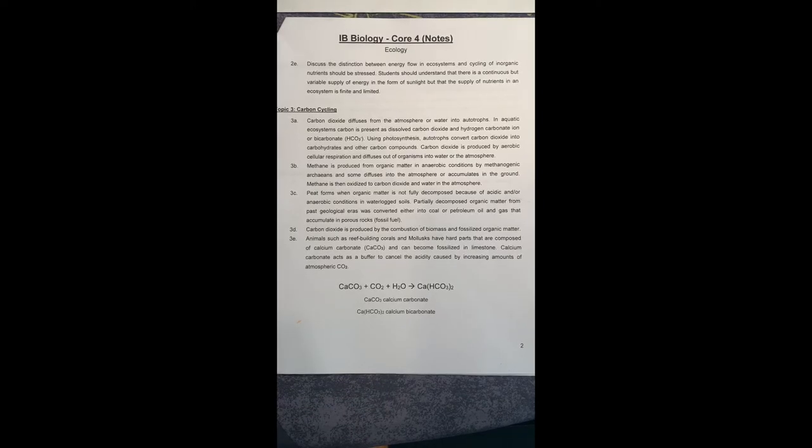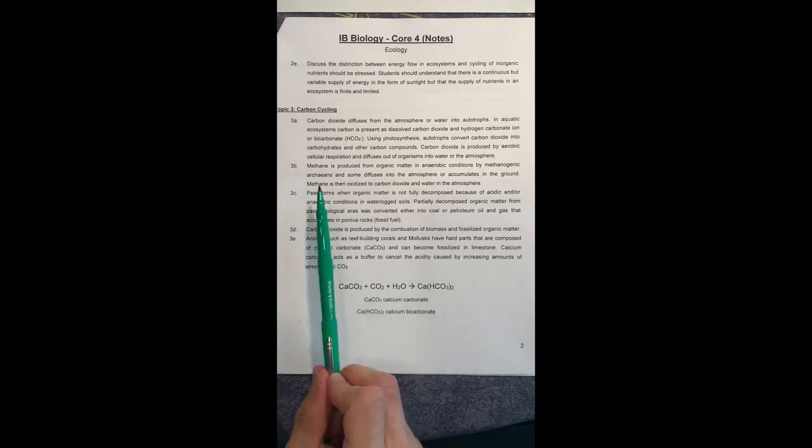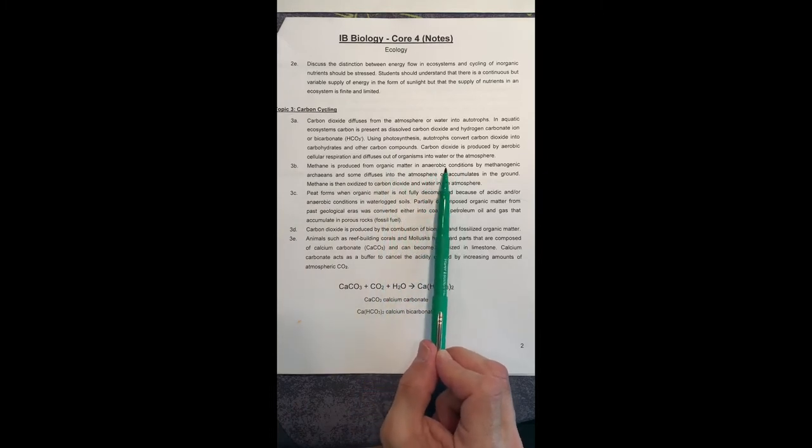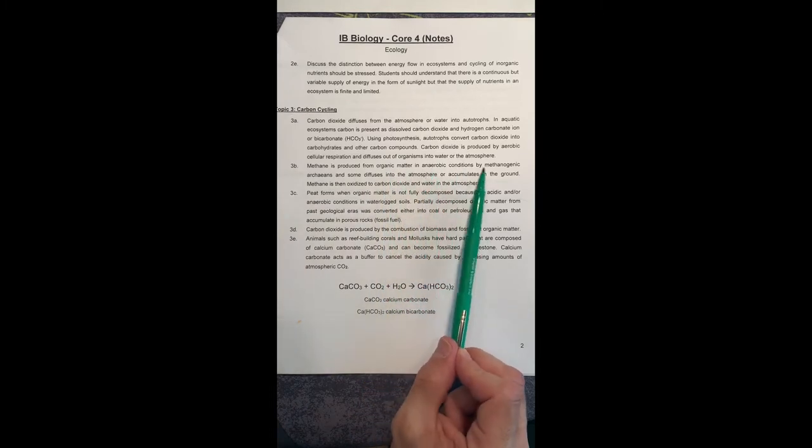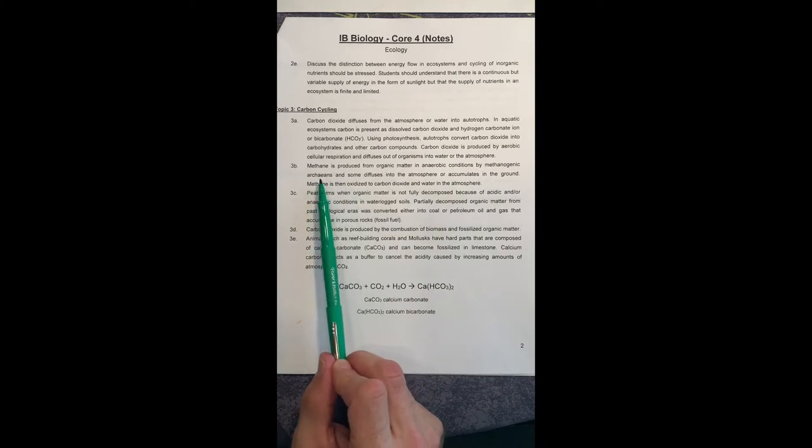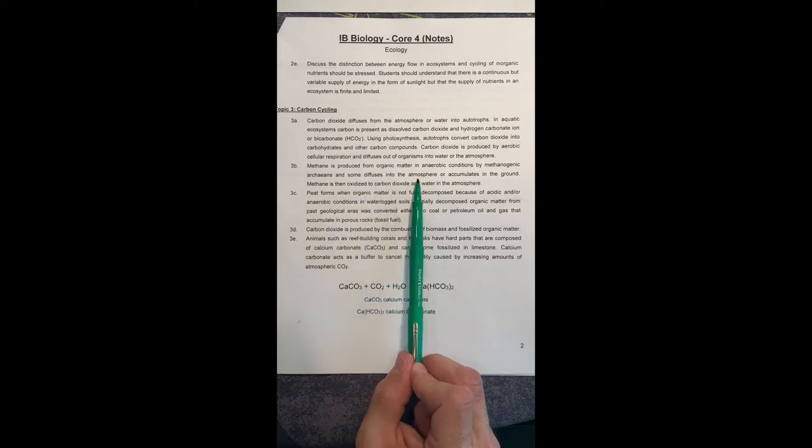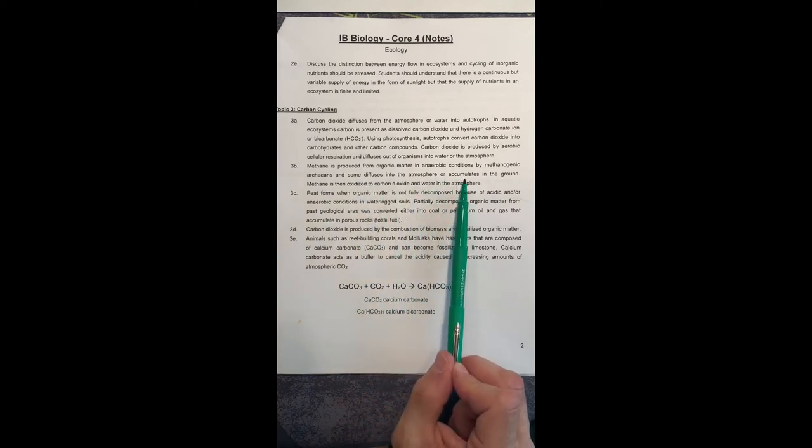Hi, everyone. We need to continue Core 4 and tackle question 3b. Let me talk about methane. So it says methane is produced from organic matter in anaerobic conditions without oxygen by methanogenic archaeans. Now that means nothing to you. It will in just a couple of minutes. And some of this methane diffuses into the atmosphere or accumulates in the ground.